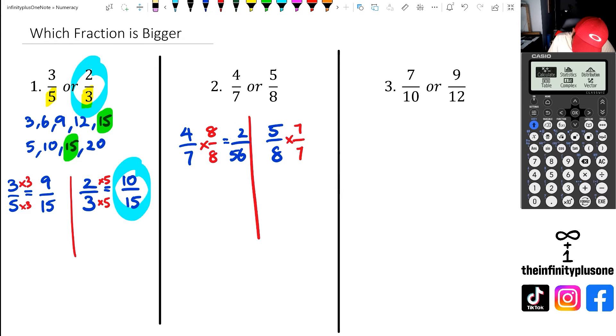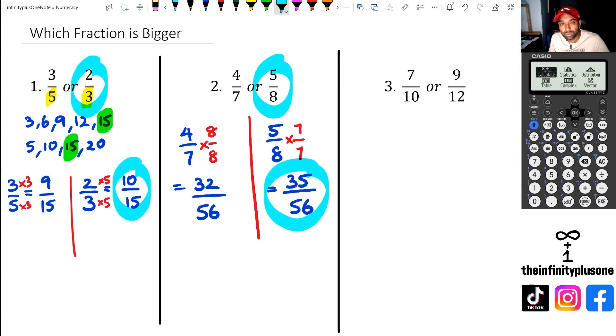Let me just rewrite that. So I'm going to write down four times eight is 32, seven times eight is 56, or five times seven is 35, and then eight times seven is 56. Now, I know that 35 is bigger than 32. So this fraction here is bigger. So it's actually five over eight.